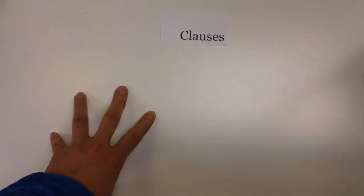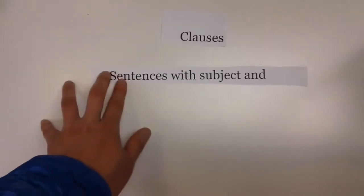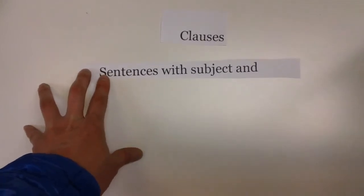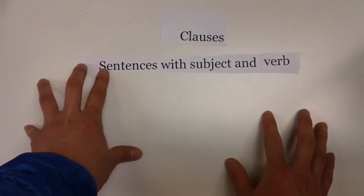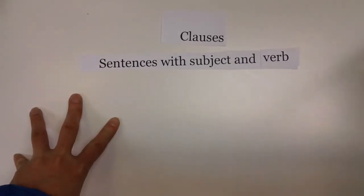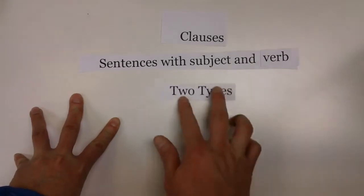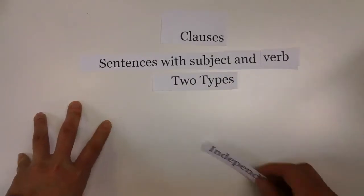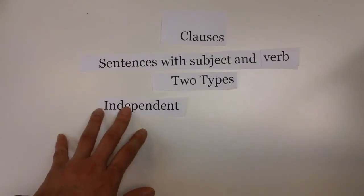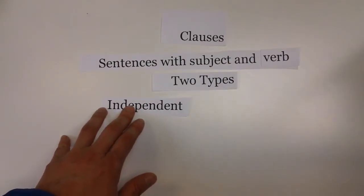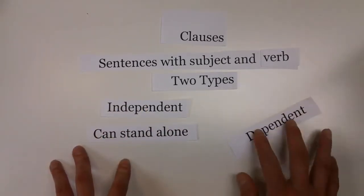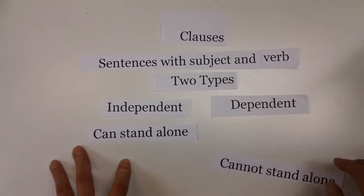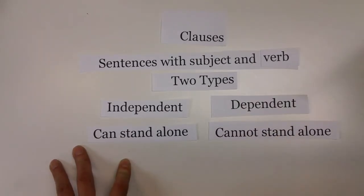What are clauses? Clauses are sentences with a subject and verb. Simple enough, right? There are two types of clauses. There is what we call an independent clause — independent clauses are sentences that can stand alone — and there are what we call dependent clauses, which are clauses that cannot stand alone.